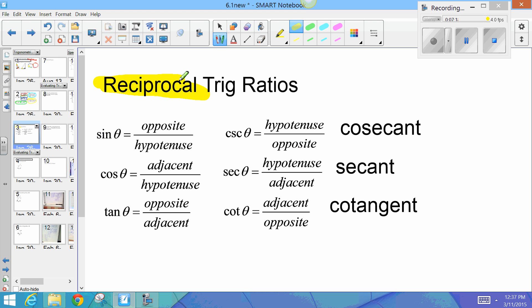Okay. So, cosecant is the reciprocal of sine. Okay. Secant is the reciprocal of cosine. Alright. So, reciprocal means you're just flipping it upside down. So, instead of adjacent over hypotenuse, you're doing hypotenuse over adjacent. Cotangent is the reciprocal of tangent.